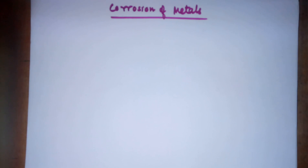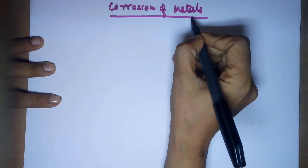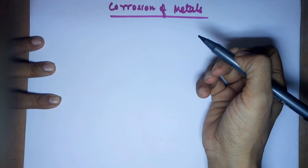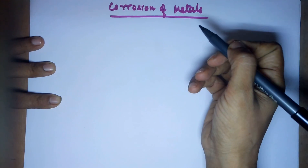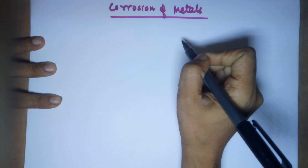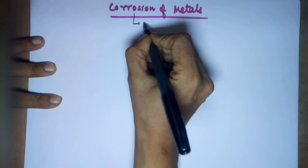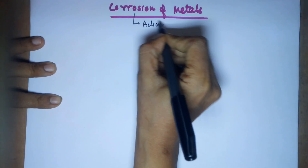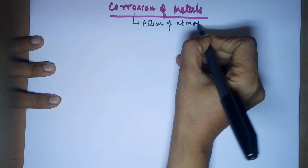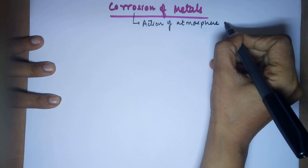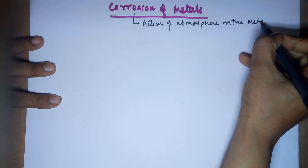Good evening students. Today's class we will be discussing about corrosion, and specifically about rusting. The word corrosion is more useful for metals — it is not that corrosion is not used for non-metals, but metals react faster under the set of conditions which are required for corrosion. Corrosion is nothing but the action of atmosphere on the metal.